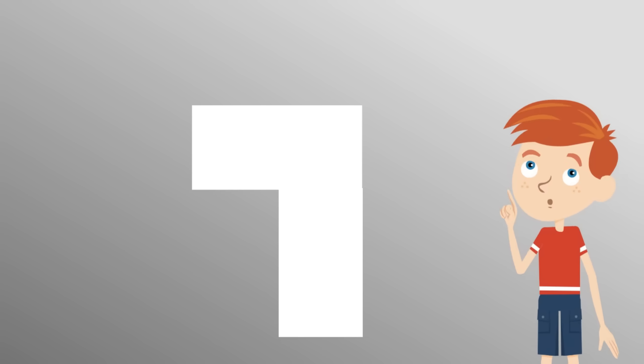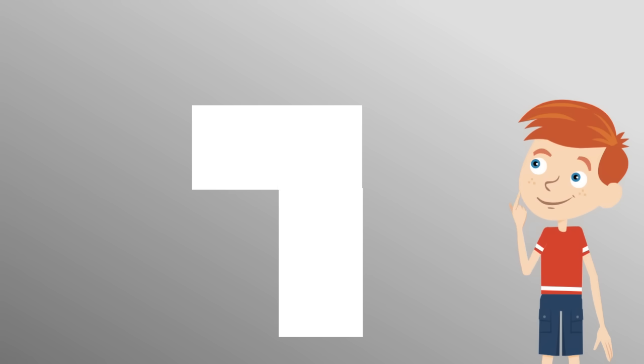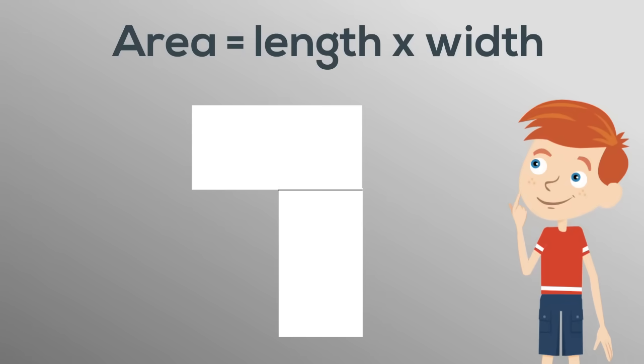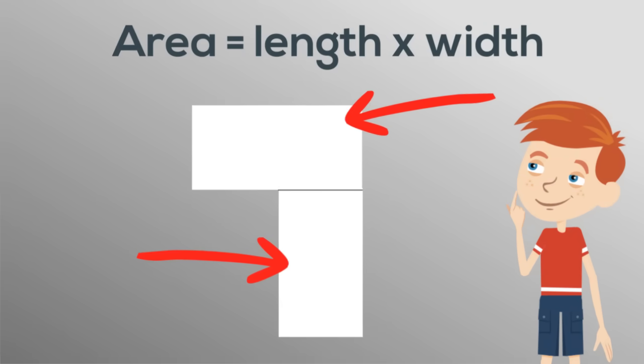There are a couple of ways we could do it. One is like this, and another is like this. Then, we'd just have to use our rule, area equals length times width, to work out the area of both rectangles.